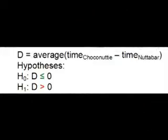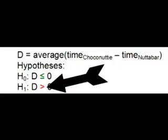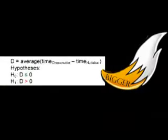Together the hypotheses look like this. We define D to be the mean population difference, and we hypothesise about whether the value of D is different from zero. Because the alternative hypothesis has a greater than sign, not an equal sign, this is a one-tailed test.